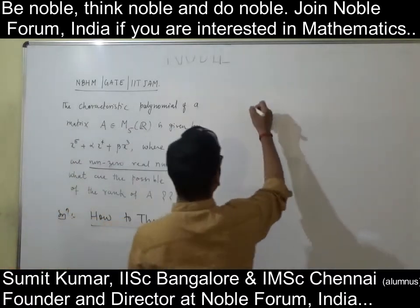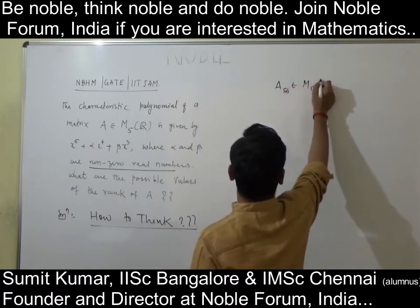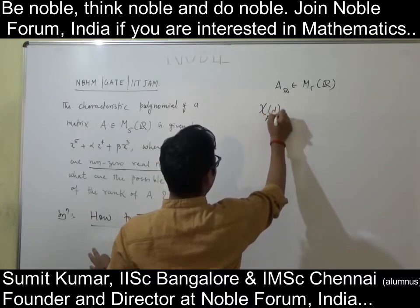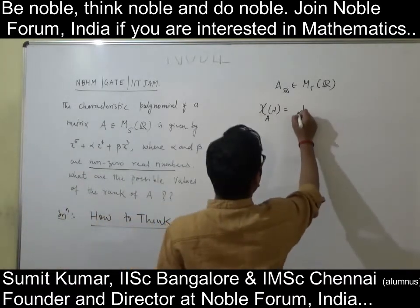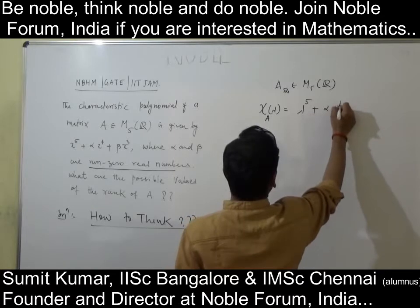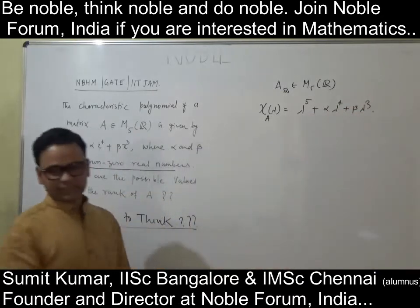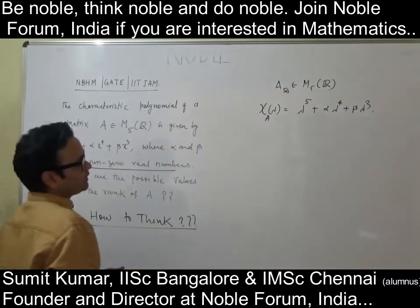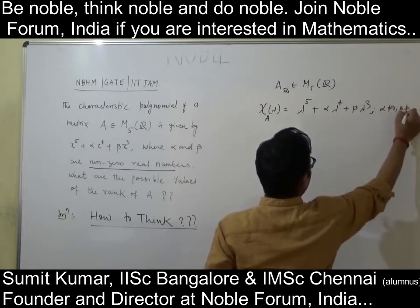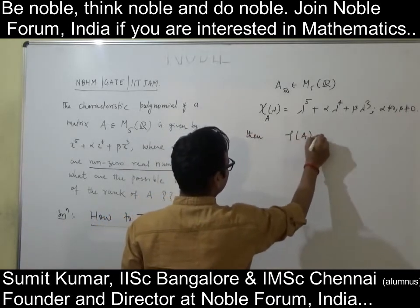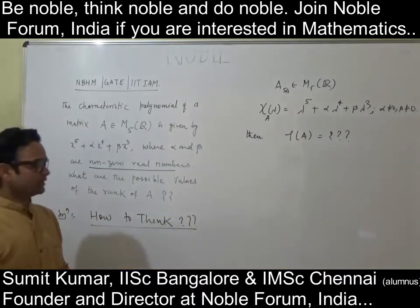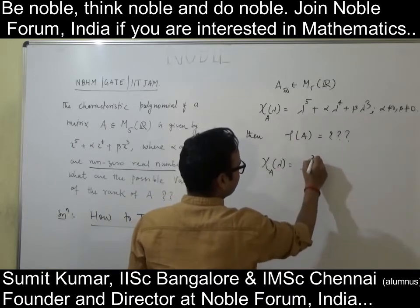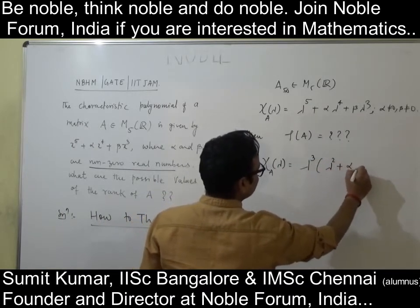Recall what is given. A is some 5×5 matrix over the real numbers. The characteristic polynomial of A, which I will write in λ, is λ⁵ + αλ⁴ + βλ³, where α and β are non-zero real numbers. Now take λ³ outside as a common factor, giving λ³(λ² + αλ + β). This is your characteristic polynomial of this matrix.